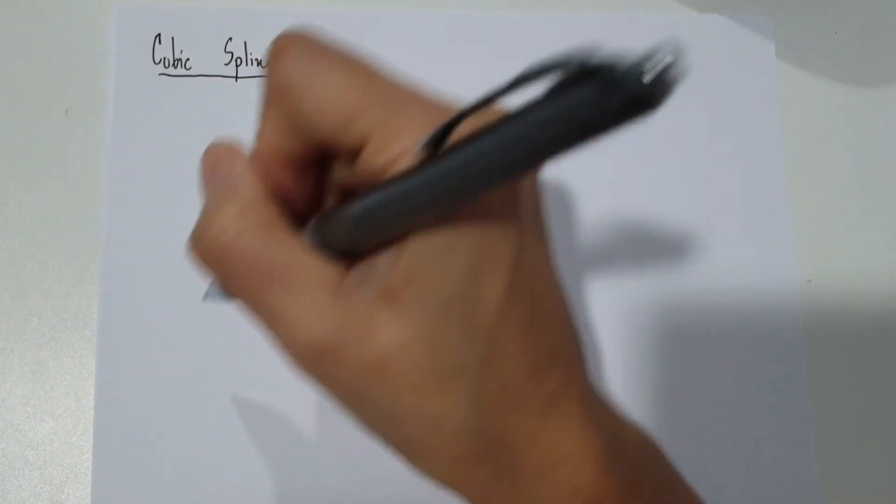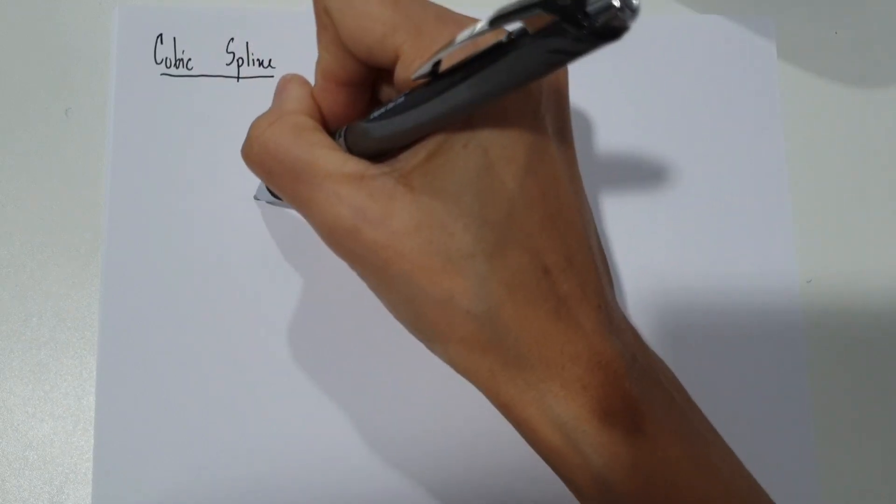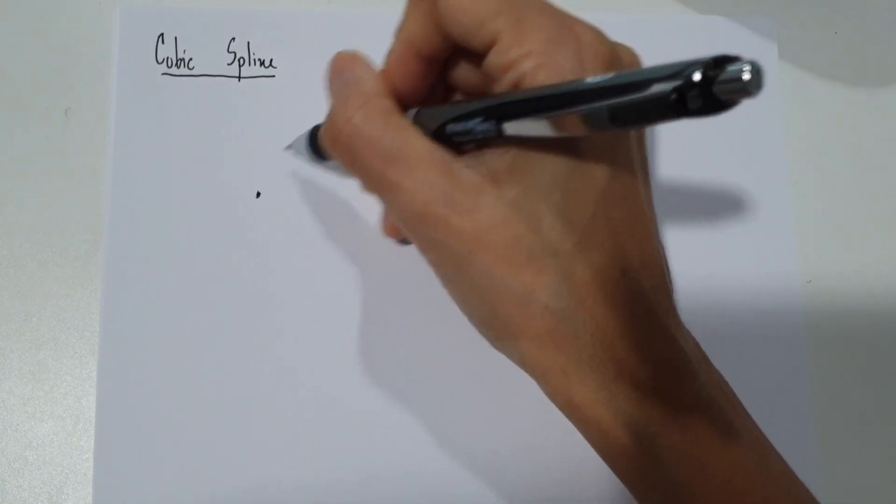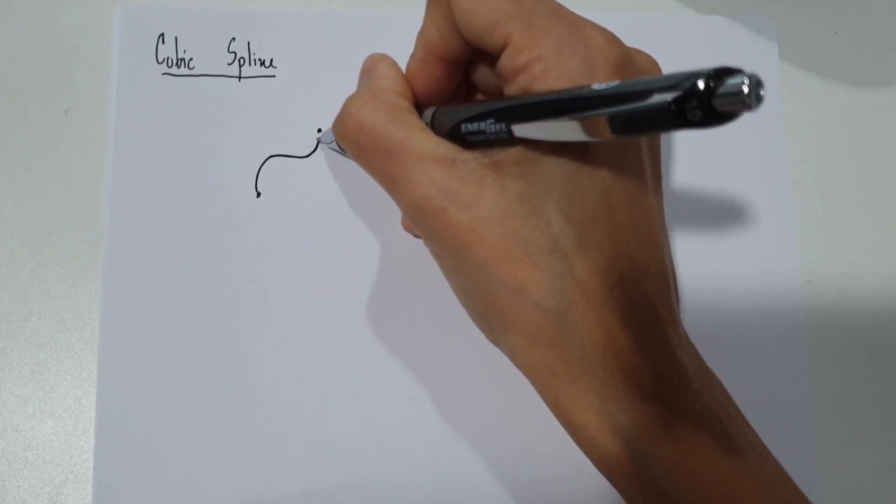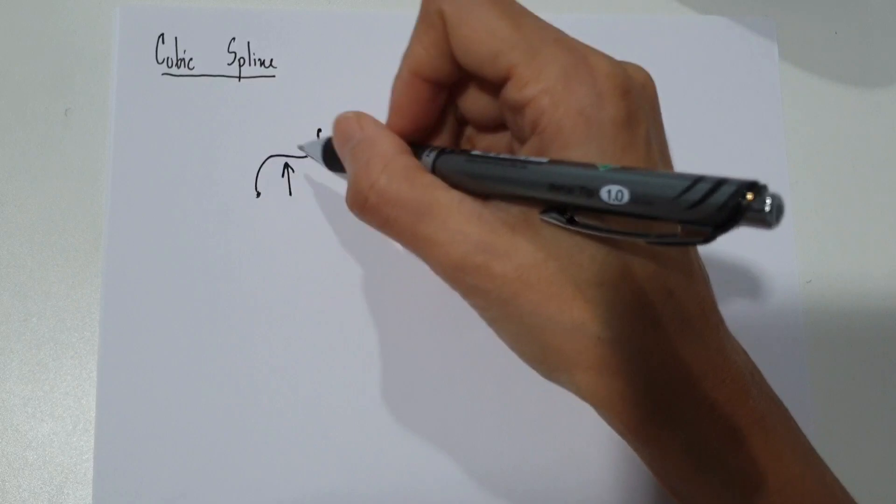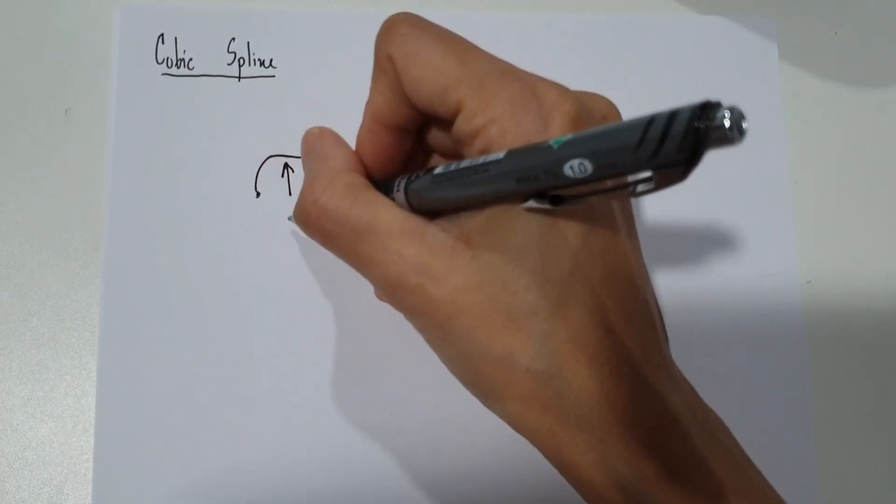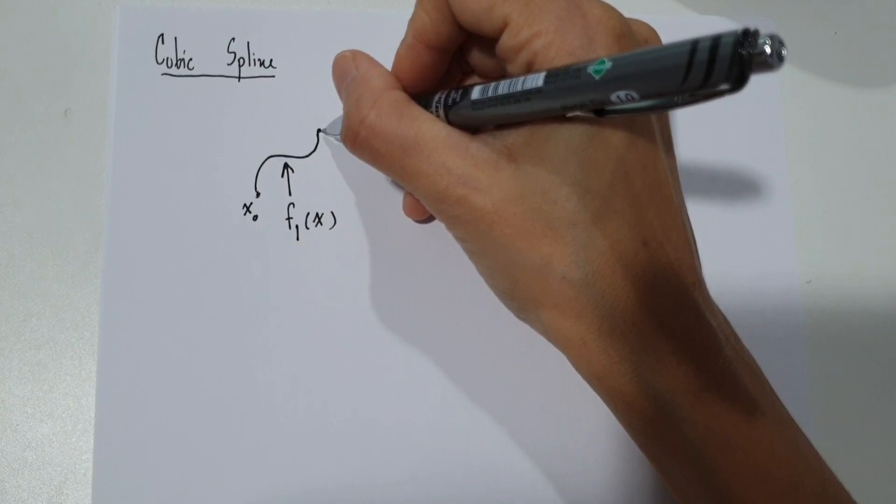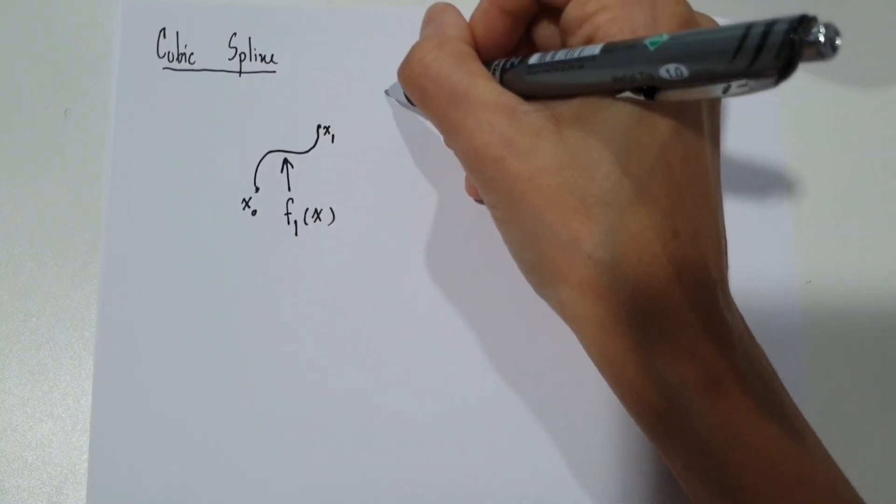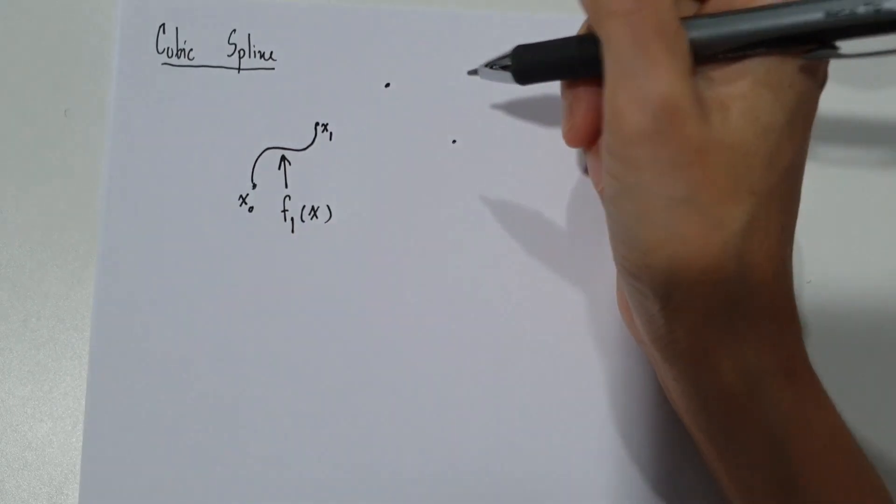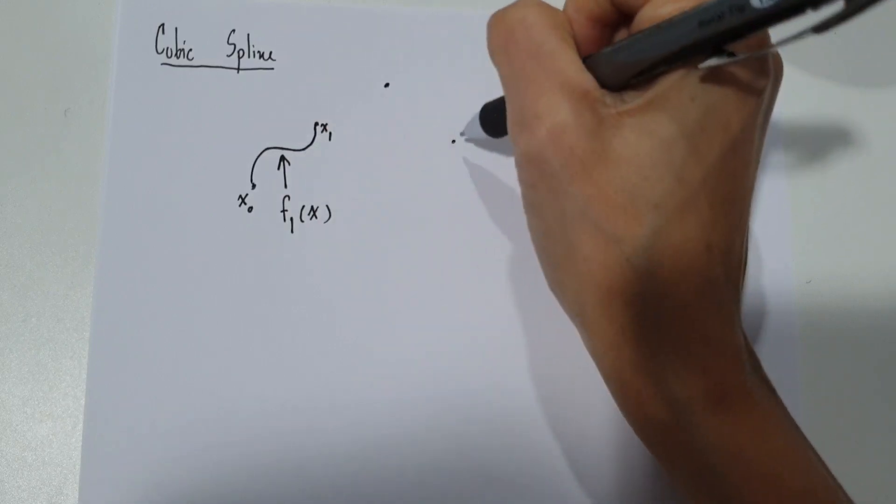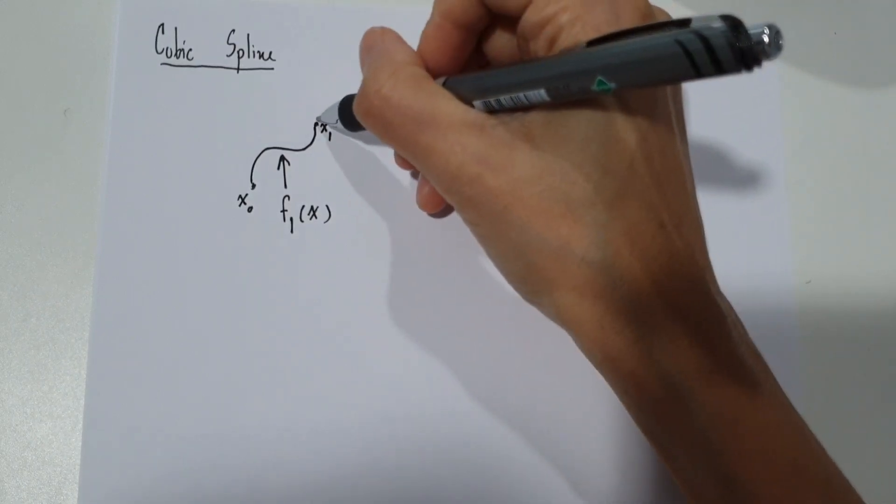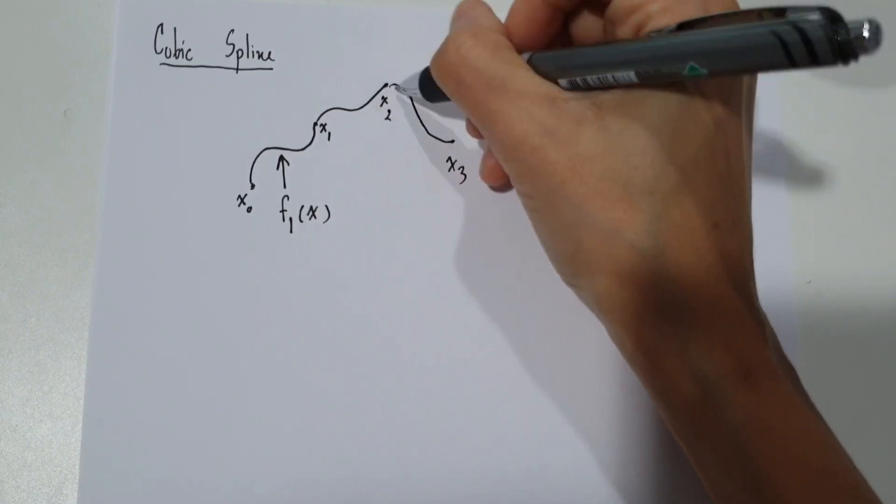The last part for spline interpolation is cubic spline. It is a similar idea to other spline interpolation in which if we have data and we try to create a function that describes the relation between each two data pairs. And if we have more than two data points, for example, we have four data points - this is x1, x2, and x3.